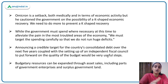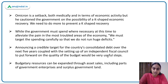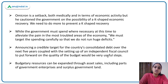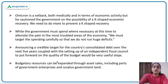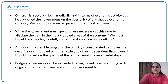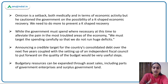He also said that Omicron is a setback both medically and in terms of economic activity, cautioning the government that we are likely to have a K-shaped recovery and need steps to prevent it. We have to focus on those sectors left behind and make proper budgetary resources. Budgetary resources can further be expanded through disinvestment, privatization, and asset monetization — utilizing surplus land and government enterprises so that money can better be used to address these darker areas.